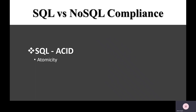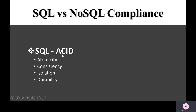I stands for Isolation: transactions cannot interfere with each other. D is for Durability: when a transaction is complete, the data must persist — even if you shut down and restart the server, that data should be available. For NoSQL compliance, it is BASE compliance. Basic Availability means the system guarantees availability in terms of CAP theory.